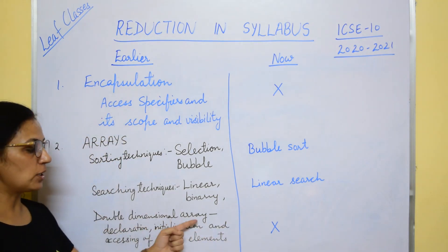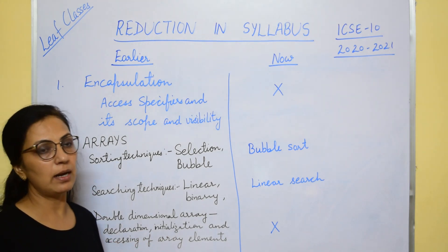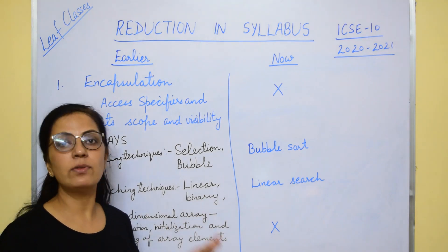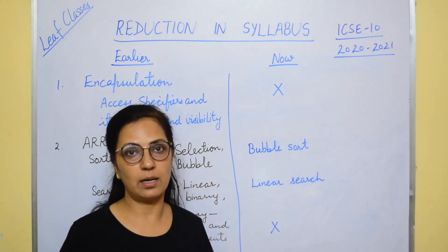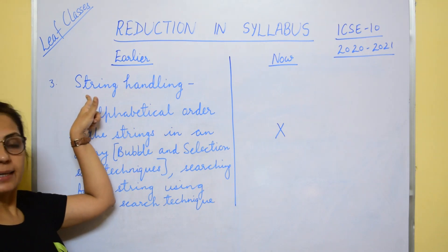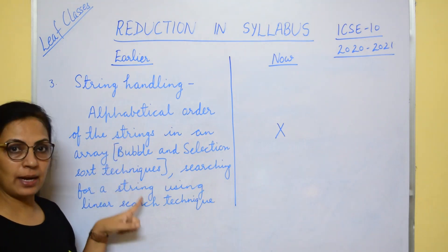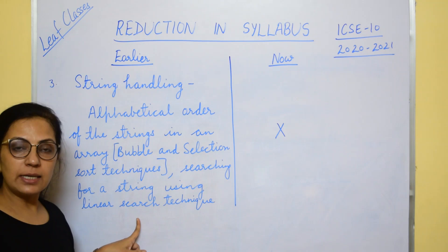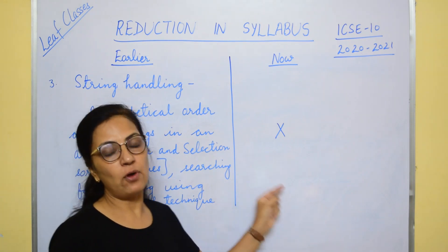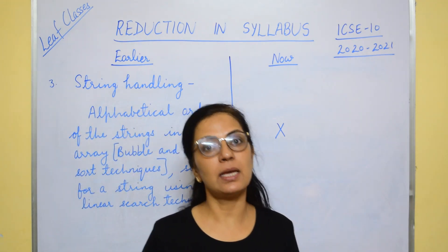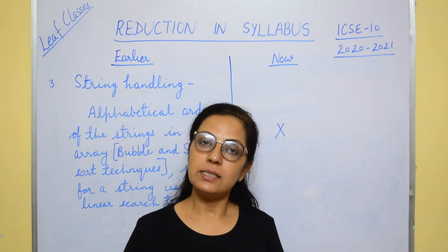From double dimensional arrays, declaration, initialization, accessing of elements, and programming using double dimensional arrays — everything is removed. That means double dimensional arrays are not present for the session 2021. Moving on to string handling — bubble sort, selection sort, and linear search techniques for string arrays are removed from the syllabus. That means we don't have string arrays, and no programming on string arrays will be there for the session 2021.